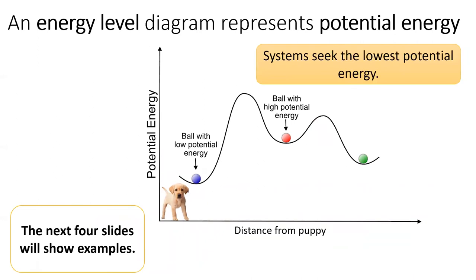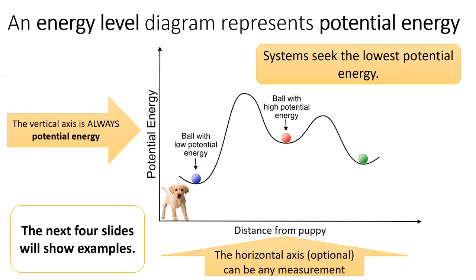We commonly represent energy on an energy-level diagram, which is a useful way to visualize energy changes in a chemical system. In an energy-level diagram, the vertical axis always represents potential energy. And the bottom axis can represent any measurement, sometimes no measurement at all. It depends on the specific system being studied.